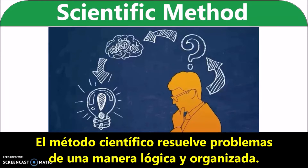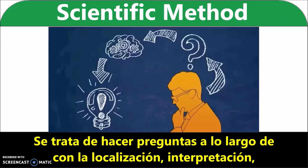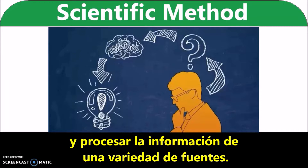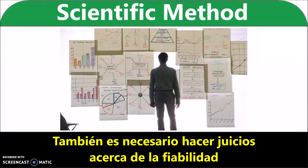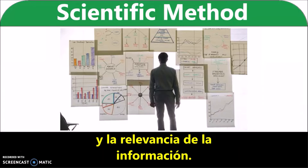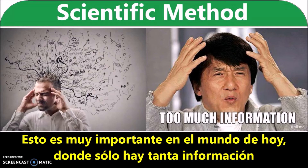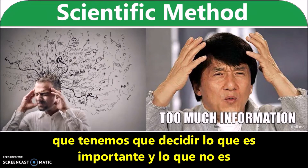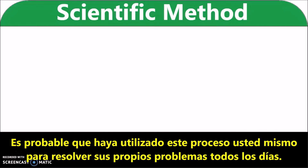The scientific method solves problems in a logical and organized way. It involves asking questions along with locating, interpreting, and processing information from a variety of sources. You also need to make judgments about the reliability and the relevance of the information. This is very important in today's world where there is just so much information that we need to decide what's important and what is not. You've probably used this process yourself to solve your own problems every day.